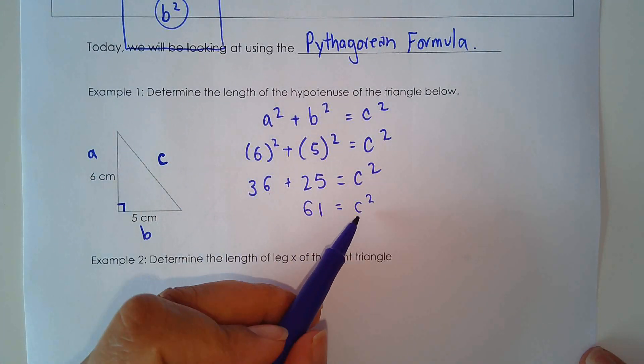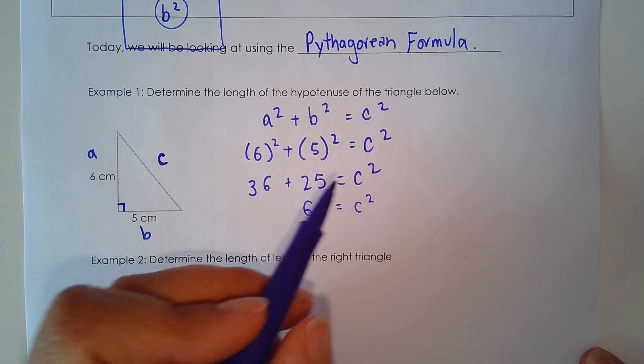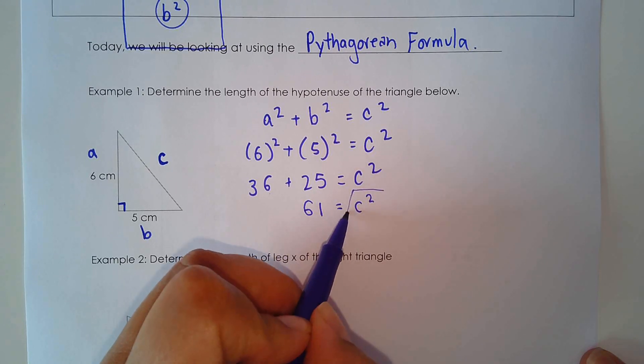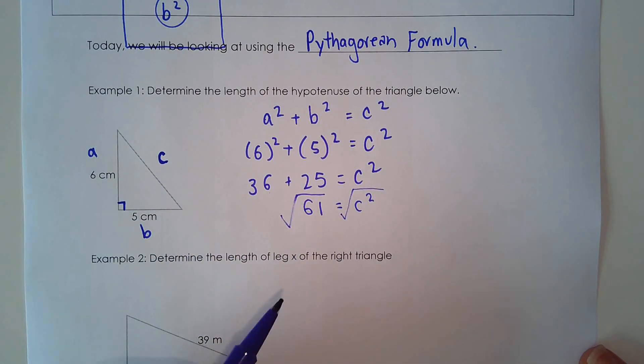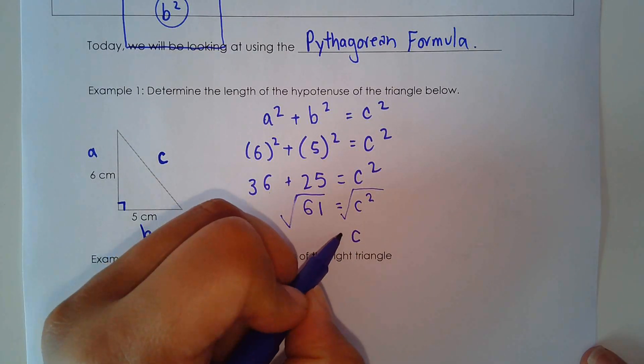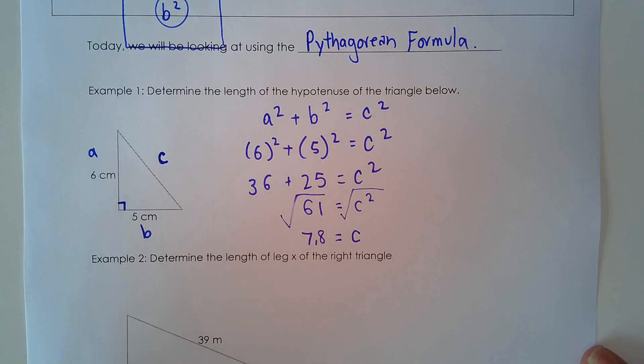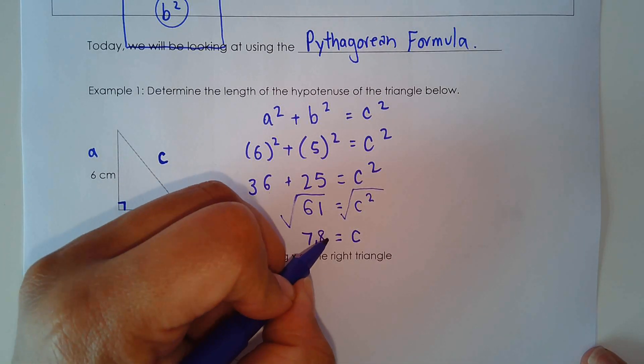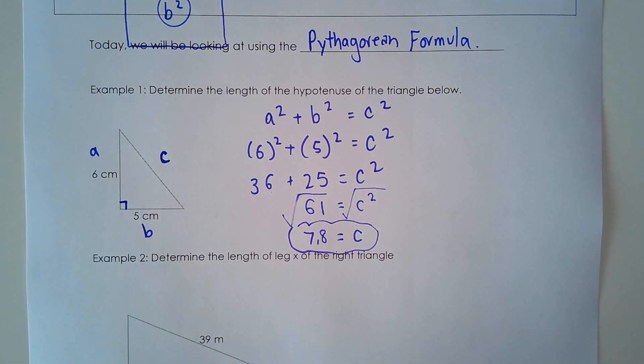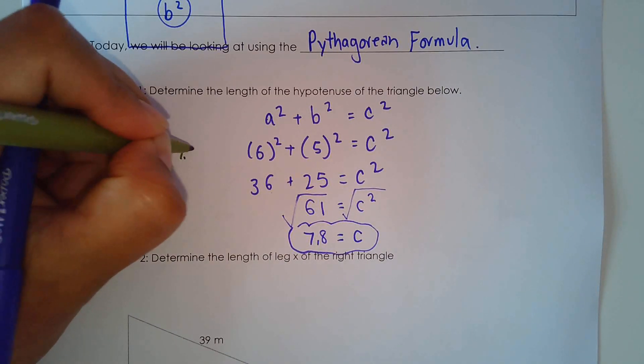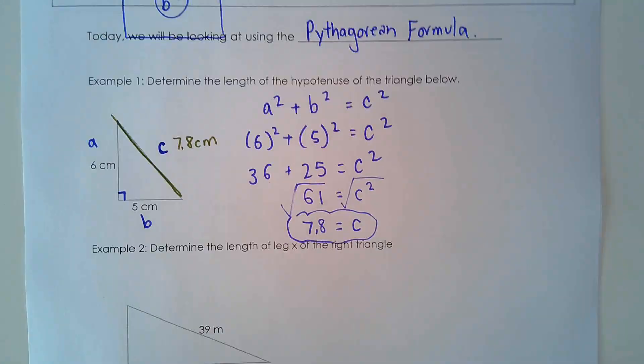And I end up with C squared equals 61. Now I don't want C squared. I don't want the area of the square. What I have to do is I have to take the square root of 61. And C equals square root of 61 to one decimal place. It is 7.8 centimeters. So C equals 7.8 centimeters. That's the length here that we solved for.